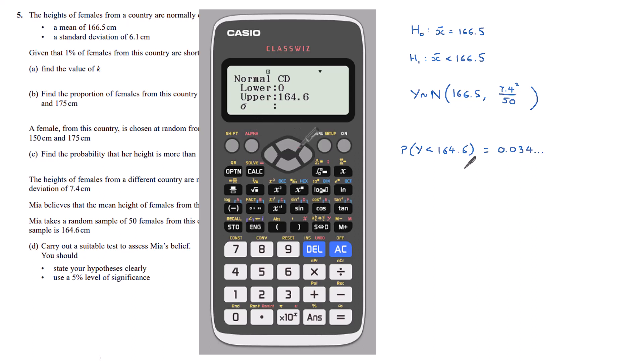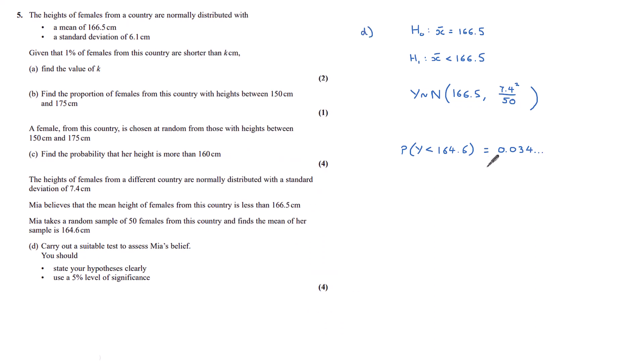Our standard deviation is the square root of our variance. So that is the square root of our 7.4 squared divided by 50, because we had the variance of our distribution. And then our mean is 166.5. And we get a value of 0.0347 and so on.